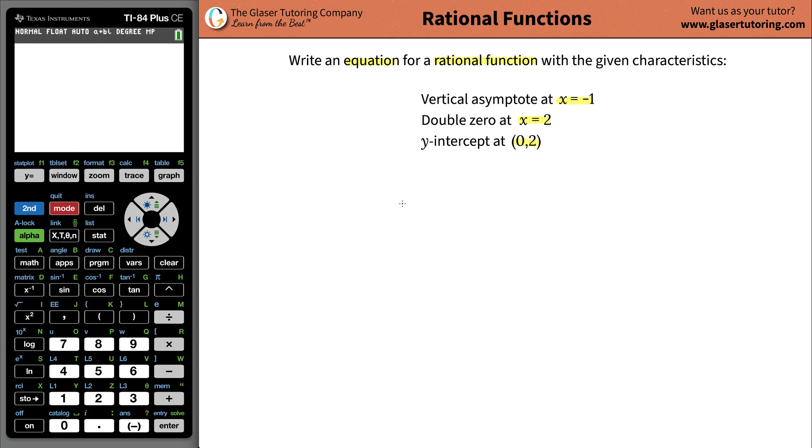The first thing is, what is a rational function? A rational function is simply a function where you have some polynomial in the numerator and some polynomial in the denominator. So you have some function g of x over h of x.